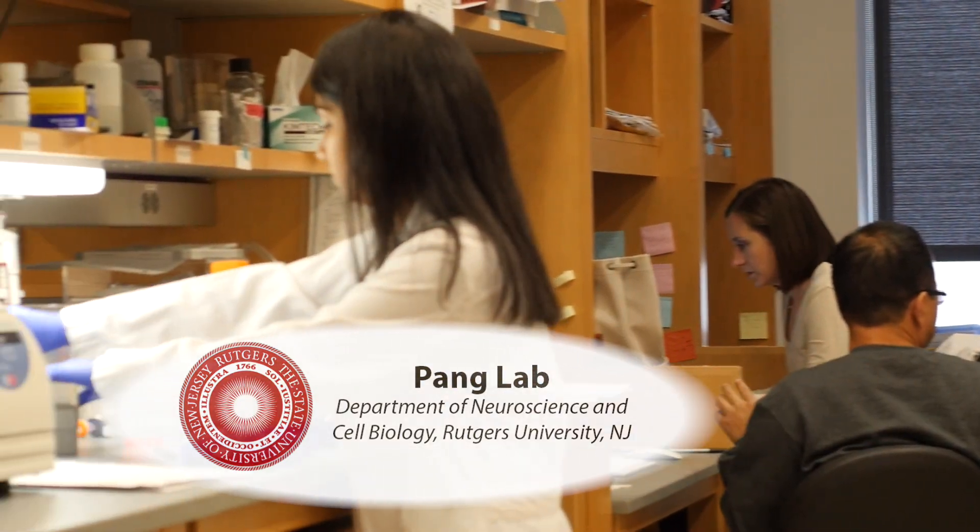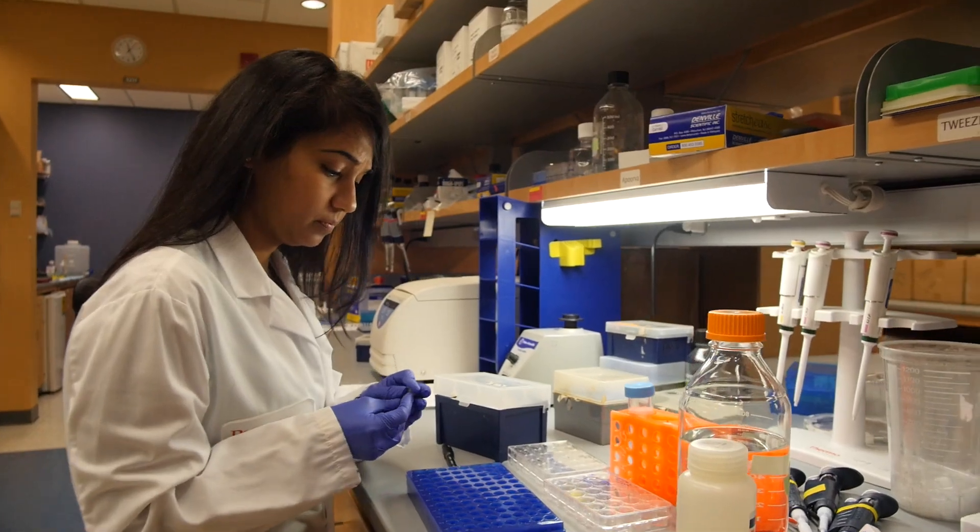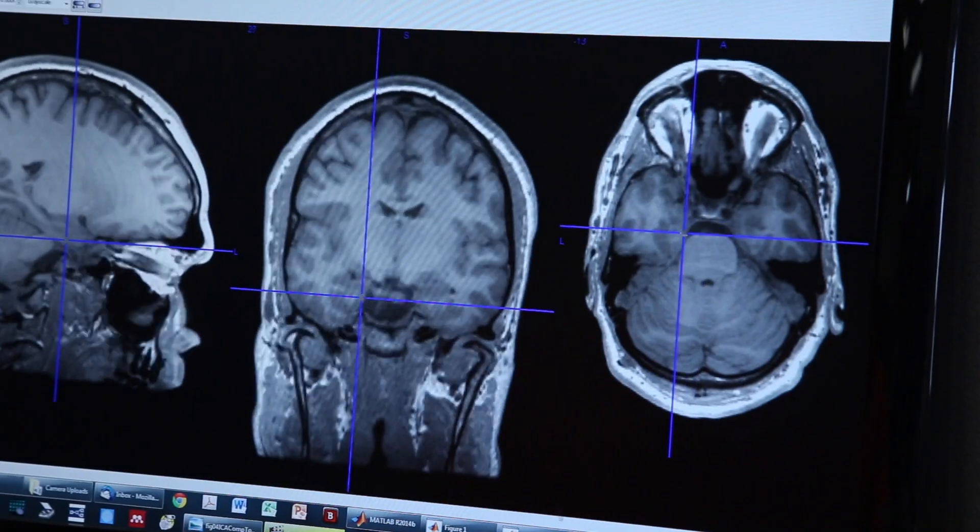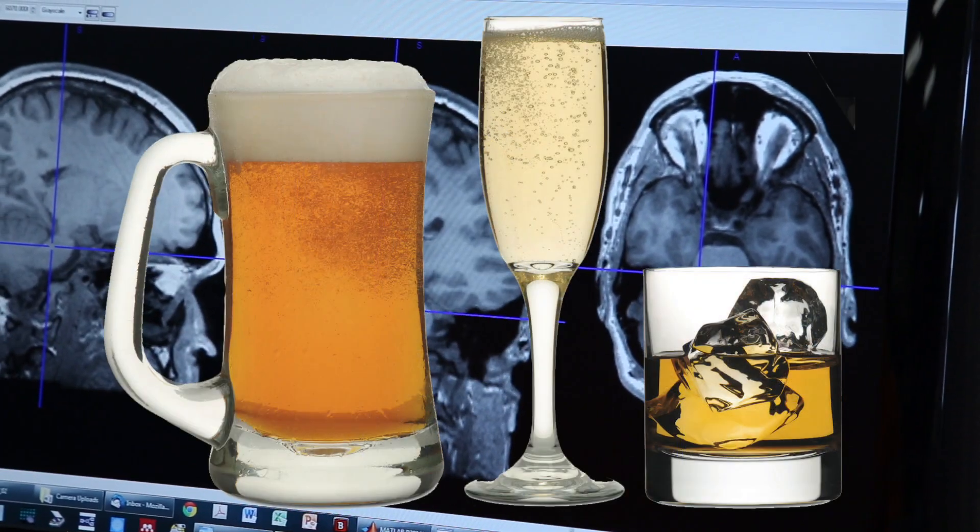My name is Apoor Vahlikaer. We're here at the Pang Laboratory at the Child Health Institute of New Jersey at Rutgers University. I'm working on the neural mechanisms of reward and how they relate to alcohol addiction.